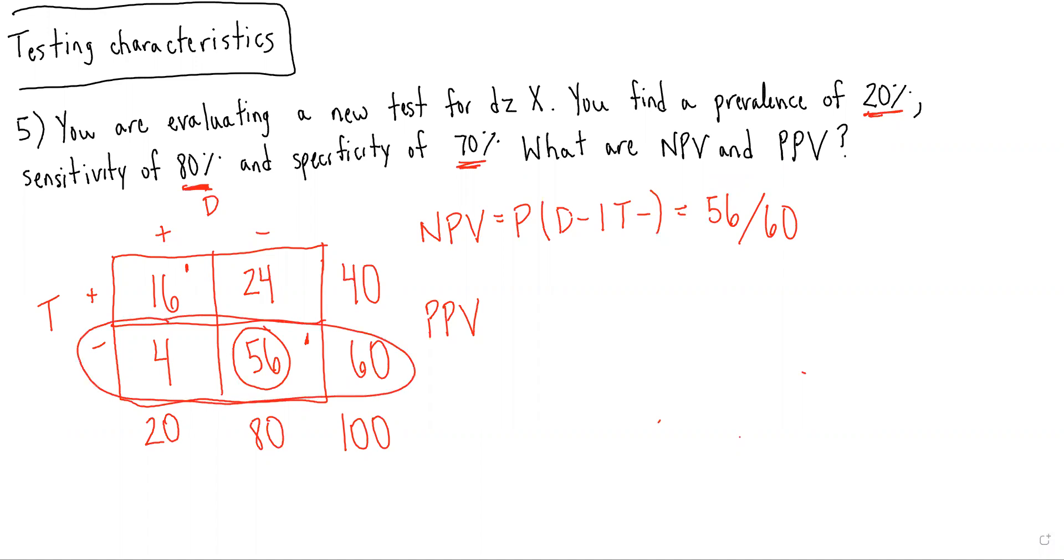And our PPV is the probability of having the disease given a positive test result, which in this case would be 16 over 40. Having the disease given a positive test result.